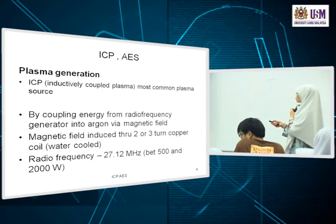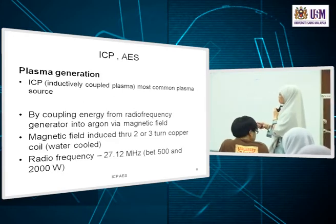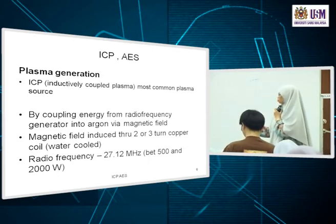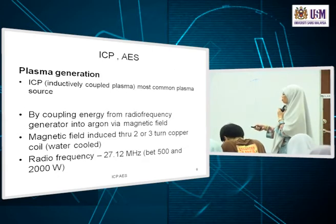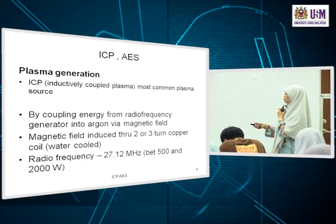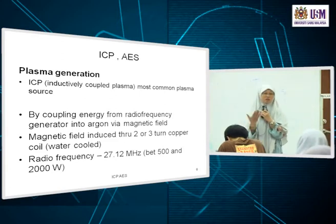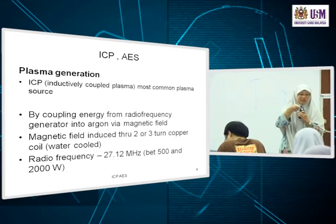The radio frequency generator induces a magnetic field H when coupled to the copper coil. Argon flows tangentially into the concentric tubes, swirling upward. The sample comes through the middle tube. To ignite the plasma, you need to seed it with electrons — since argon is inert, there is nothing that can simply burn.